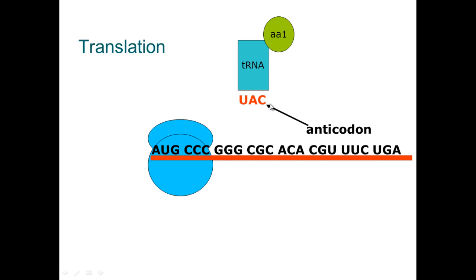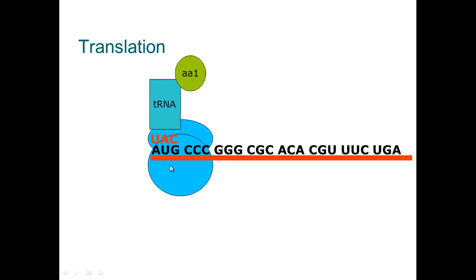This triplet code is known as the anticodon. This triplet base here is known as the codon, and they will bind. This transfer RNA has an anticodon of UAC. A transfer RNA that has UAC will always code for the same type of amino acid.